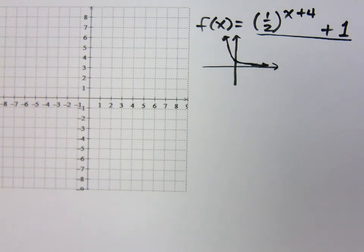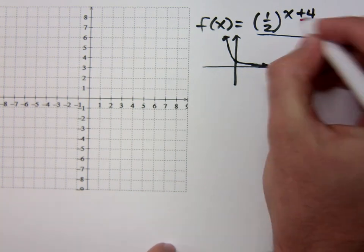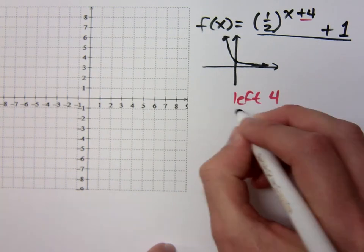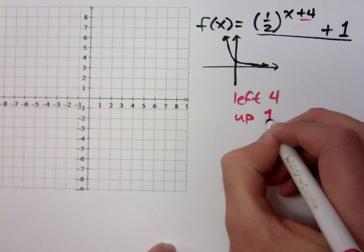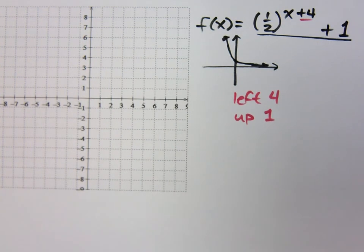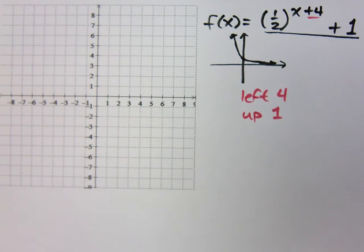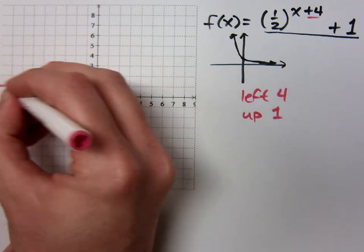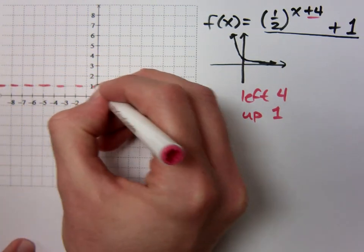I've got a plus 4 up in the exponent, so that means I'm going to go to the left 4, and then up 1. So, left 4 and up 1. Since I'm going up 1, I know that I have a horizontal asymptote right here.